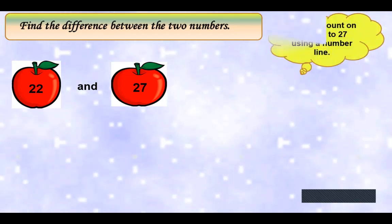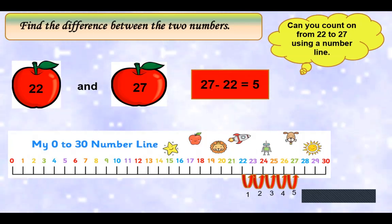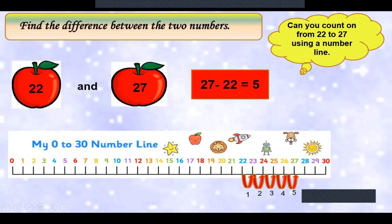Now find the difference between the two numbers. Here children, 22 and 27. Here can you count on from 22 to 27 using a number line? Here you can see the number line. So you are counting on from 22 to 27. So children, how many jumps we are making? 22 to 23: 1. 23 to 24: 2. 24 to 25: 3. 25 to 26: 4. 26 to 27: 5. Yes, the answer is 5. 27 minus 22 is 5.